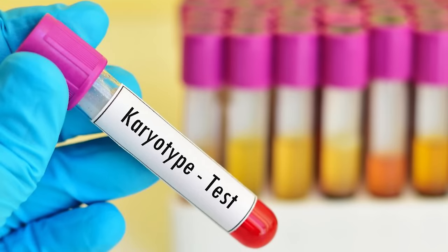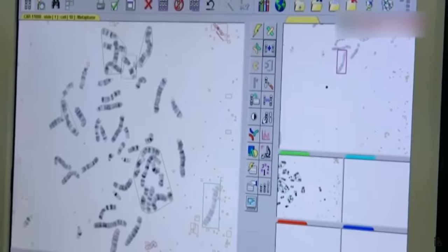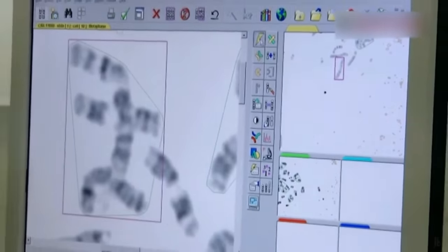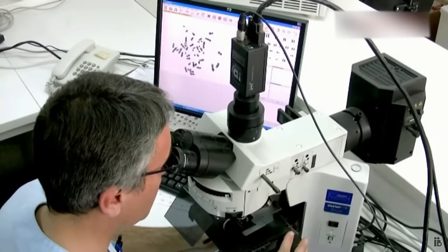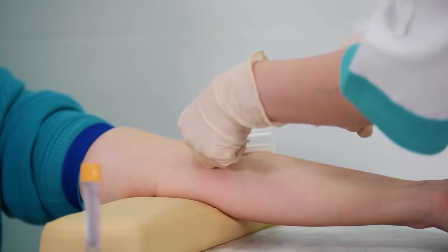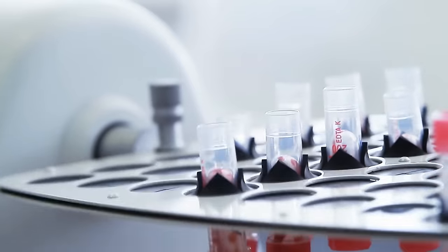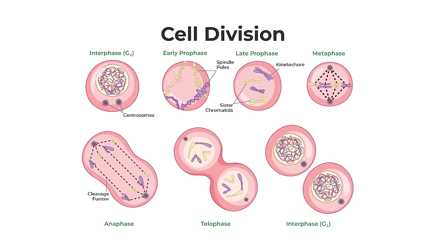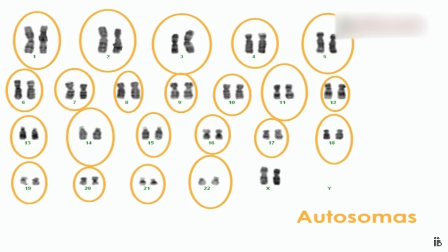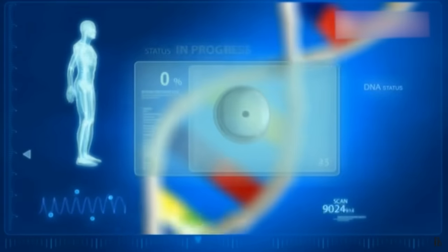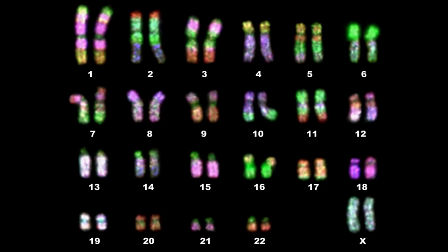The simple answer is, we counted our chromosomes through a process called karyotyping. Karyotyping is basically a laboratory technique used to examine the number, size, and structure of chromosomes in a cell. The process begins with collecting a sample of cells, often from blood, and culturing them to promote cell division. Cell division is basically how the cell multiplies, and is the only time we can actually count the chromosomes. This is because it is the only time when chromosomes are fully condensed and distinct enough to be counted accurately.